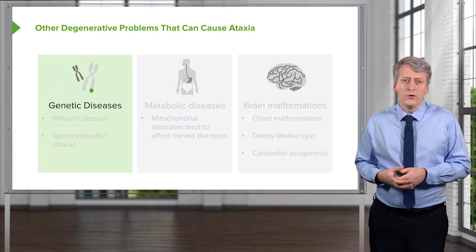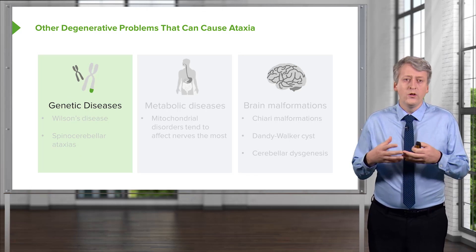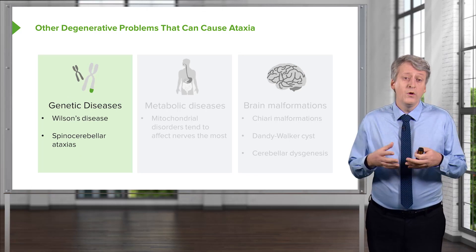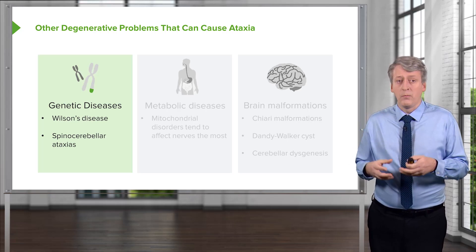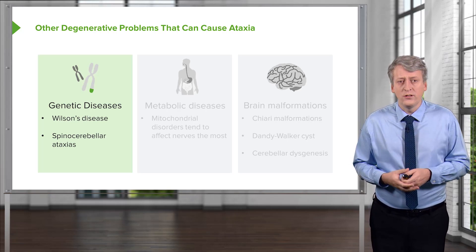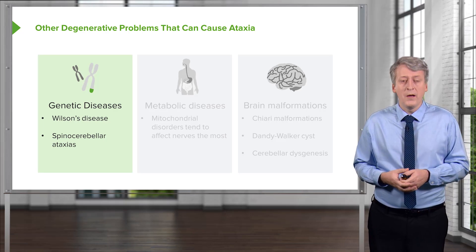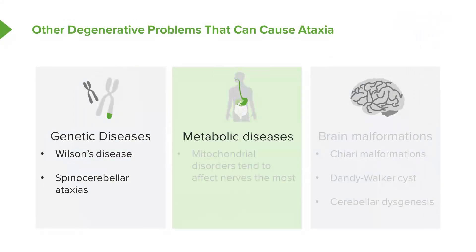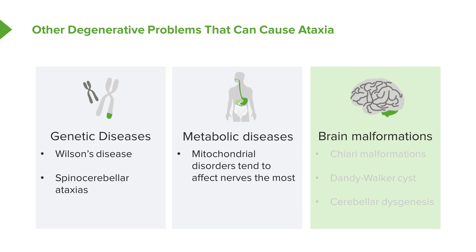Other degenerative problems that can cause ataxia in children include genetic causes such as Wilson's disease, which causes an accrual of copper and particularly affects the basal ganglia. Children can also get spinocerebellar ataxias. Metabolic disease can cause ataxia as well — specifically, mitochondrial disorders tend to affect the nerves most, and those children may have consequences. Brain malformations can also cause ataxia, with examples including Chiari malformations, Dandy-Walker cysts, and cerebellar dysgenesis.